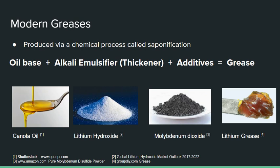Here we see the modern grease ingredient list and what goes into them. 80 to 90% of a modern grease is an oil base. The rest is an alkali emulsifier or a thickener, and additives are also added to enhance the physical properties of the grease.